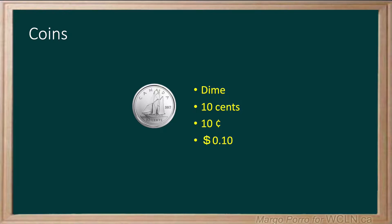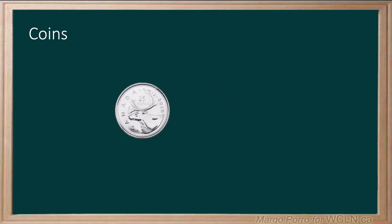The coin with the next smallest value is the quarter. It usually has a caribou on it, but sometimes special quarters are made with different images. This coin has a value of 25 cents. It can be written using the cent sign and it can be written with the dollar sign.